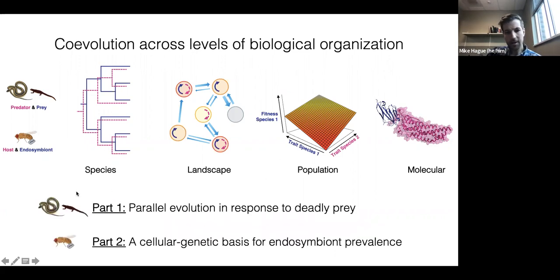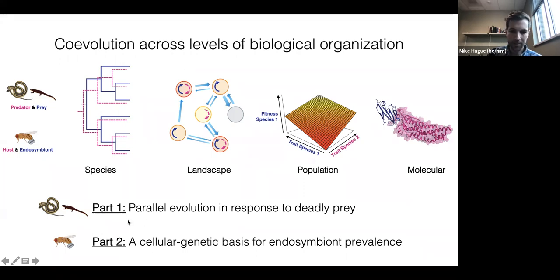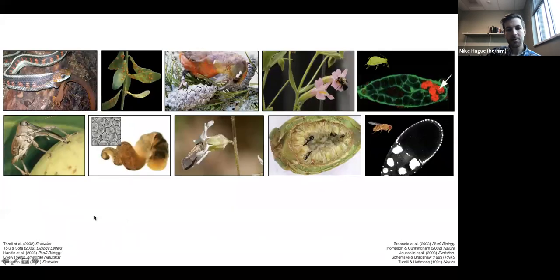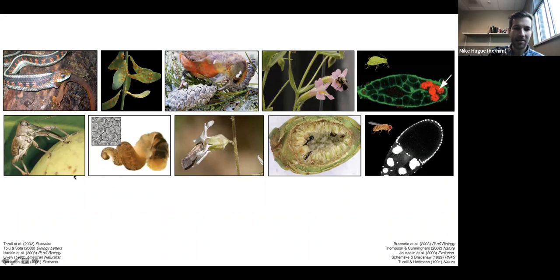Today I'm going to have two parts to this talk: one from my PhD on predator-prey interactions, and one detailing some very new work coming out of my postdoc on relationships between hosts and Wolbachia, this really common endosymbiont. So first I'm going to focus on some of my PhD work and tell you a story about co-evolution between predator and prey, starting on the antagonistic end of this continuum.